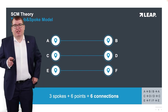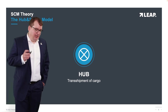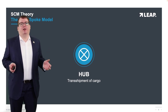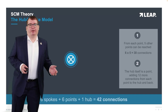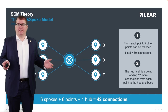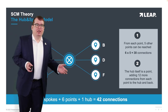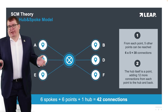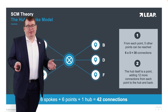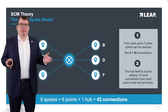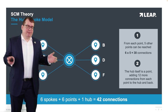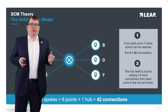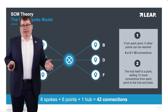If we now introduce a hub to this model — a hub is by definition a site where a transshipment, handover, or transfer of cargo takes place — installing this in our network would actually increase the number of connections. From each start and end point, you could directly reach five different end points, equaling 30 connections. The hub itself can also be seen as a point, adding 12 more connections to and from the hub, bringing the total to 42 connections. By installing just one little hub, you increase your offered connections by a lot.